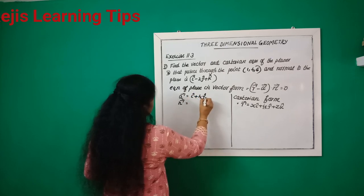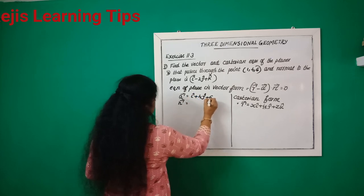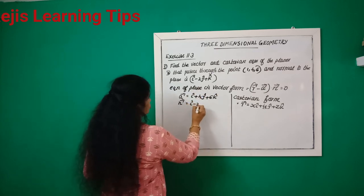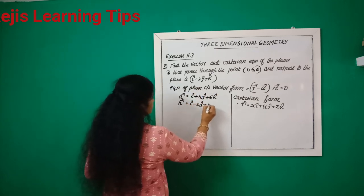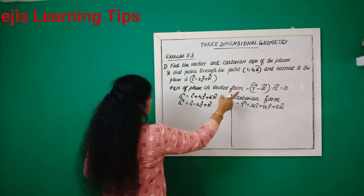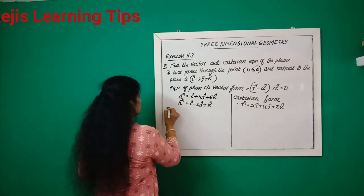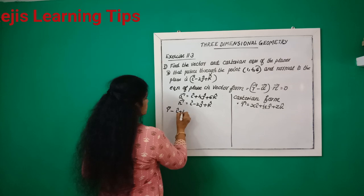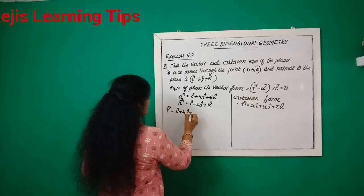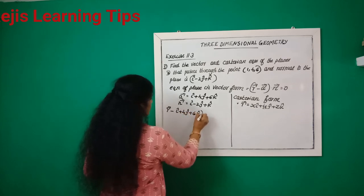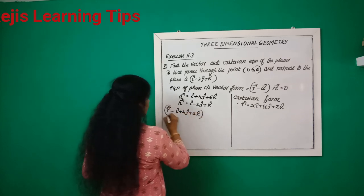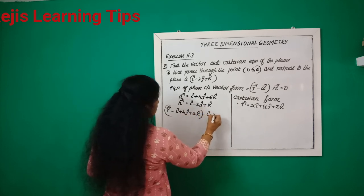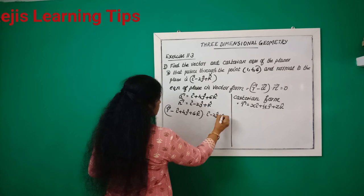a vector is i plus 4j plus 6k. So: vector r minus (i plus 4j plus 6k), dot (i minus 2j plus k) equals zero.